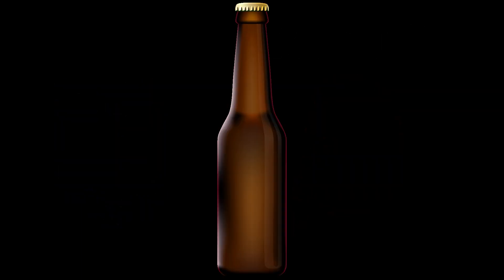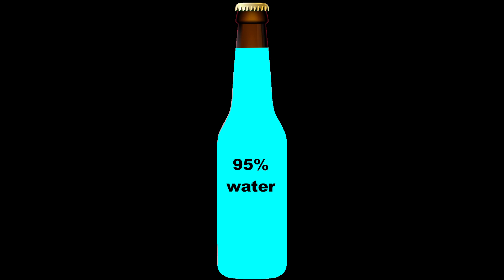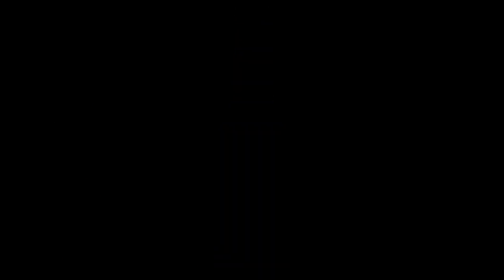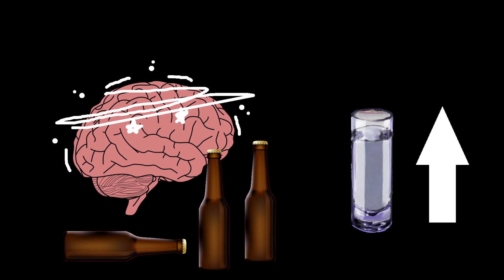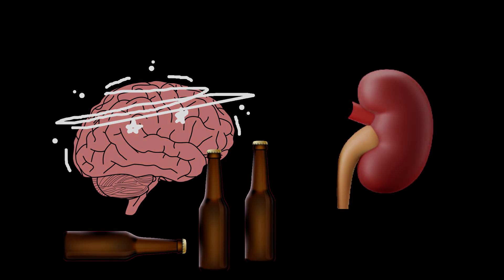This is why beer in particular will make you pee a lot. Being only a small percent alcohol, it's mostly water. If you drink enough to get drunk, your hydration is also fairly high, so there is more water for your kidneys to pull out in response to the reduced ADH levels.